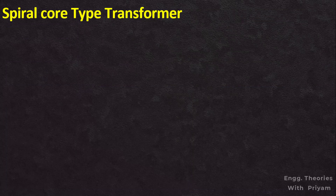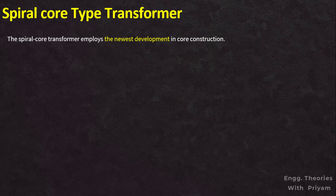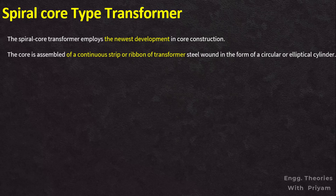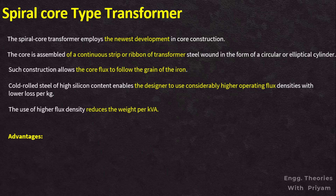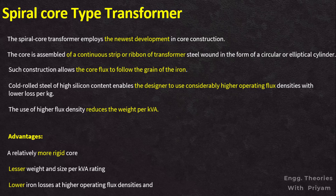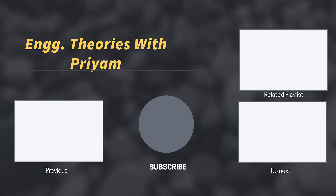Another core gaining popularity is the spiral core. The spiral core transformer employs the newest development in core construction; the core is assembled from a continuous strip or ribbon of transformer steel wound in the form of a circular or elliptical cylinder. This construction allows the core flux to follow the grain of the iron. Cold rolled, high silicon steel enables the designer to use considerably higher operating flux densities with lower loss per kg. The advantages of such construction are a relatively more rigid core, lesser weight and size per kVA rating, lower iron losses, and lower cost of manufacture.